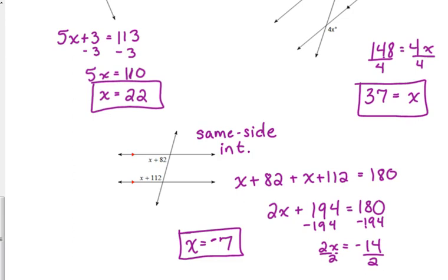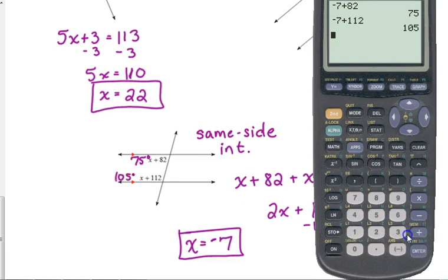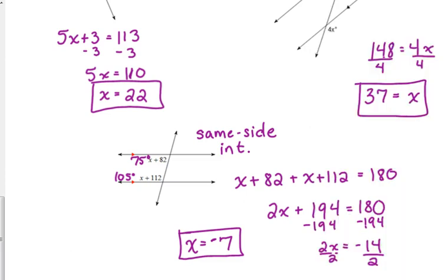Just for the sake of it, let's find out what those two angle measurements are. Just to check. So, since we've got negative 7, let's do negative 7 plus 82. So, this angle is 75 degrees. And negative 7 plus 112. This angle is 105 degrees. And those two together do add to give 180.